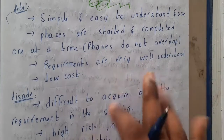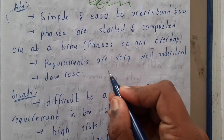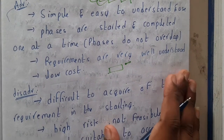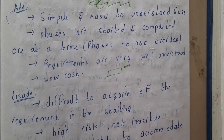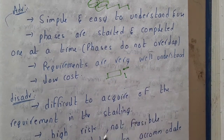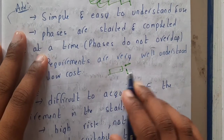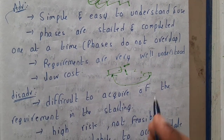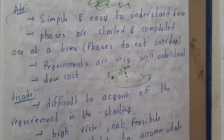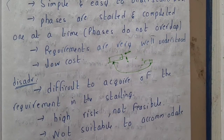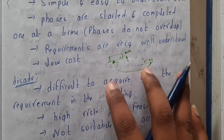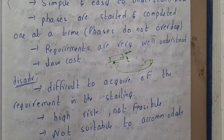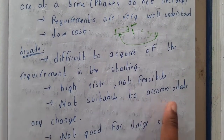The major disadvantage is that it is difficult to accurately gather all requirements at the start. If the wrong requirements are collected, you have to return all the way back and restart the cycle. Client meetings happen after each stage, and if something goes wrong in an earlier step, all subsequent steps are flawed.